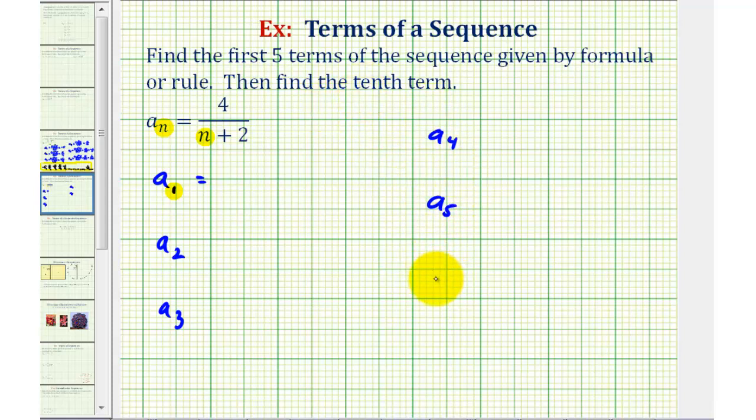Then to find the tenth term, we need to find a sub ten. So if we know which term we're looking for, we also know the value of n.